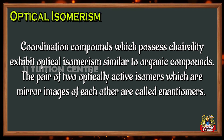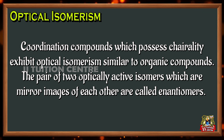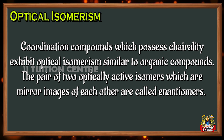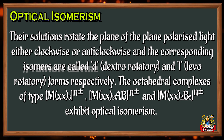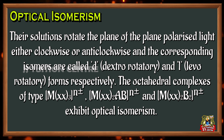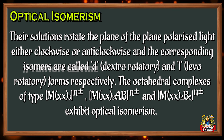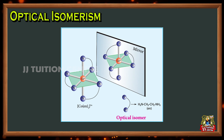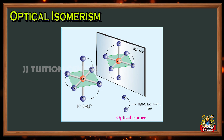Next, optical isomerism. The coordination compounds which possess chirality exhibit optical isomerism, similar to organic compounds. The pair of two optically active isomers which are mirror images of each other are called enantiomers. Their solutions rotate the plane of plane-polarized light either clockwise or anti-clockwise, and the corresponding isomers are called D (dextrorotatory) and L (levorotatory) forms respectively. The octahedral complexes of type M(XX)₃, M(XX)₂AB, and M(XX)₂B₂ exhibit optical isomerism.